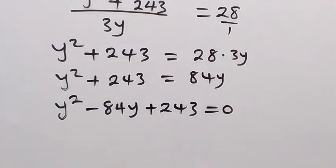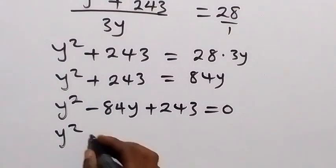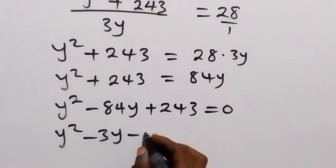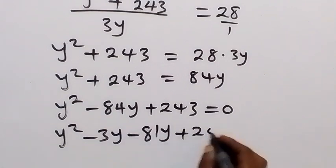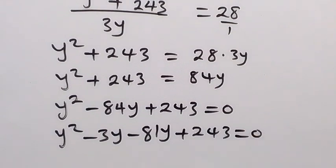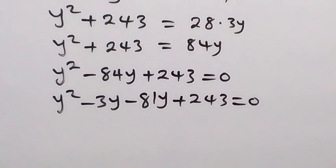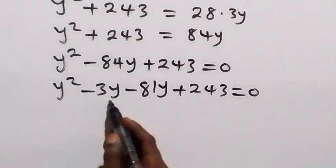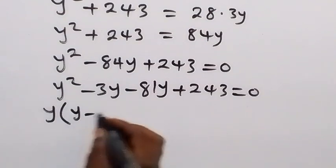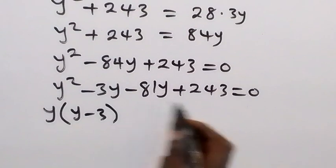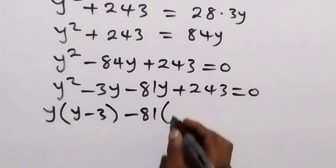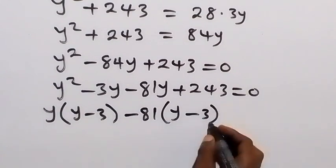This is a quadratic equation that we can factorize. We factor minus 84y as minus 3y minus 81y, since minus 3 times minus 81 gives plus 243. Grouping: y is common in the first two terms giving y(y minus 3), and minus 81 is common in the last two terms giving minus 81(y minus 3). This equals zero.